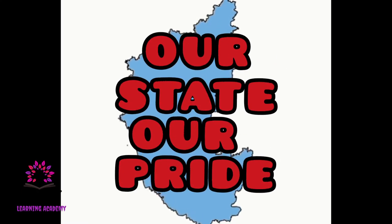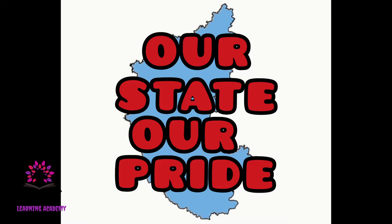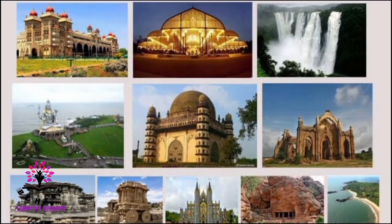Hello students, today we are going to study a new chapter: Our State, Our Pride, Lesson 25 from your Class 4 EVS textbook. In this chapter, you're going to learn to locate Karnataka on the map of India, learn the physical divisions of Karnataka state, and recognize the historical and famous natural resources of the state and develop an attitude to protect them by knowing their importance.